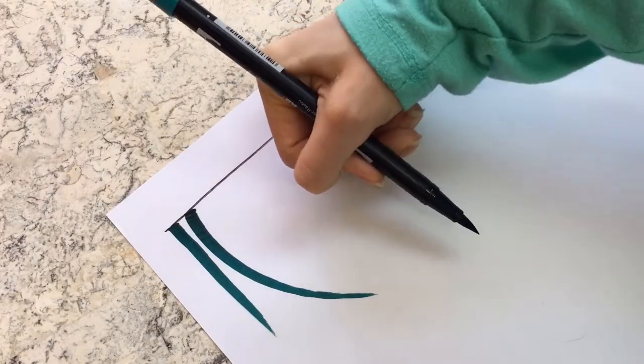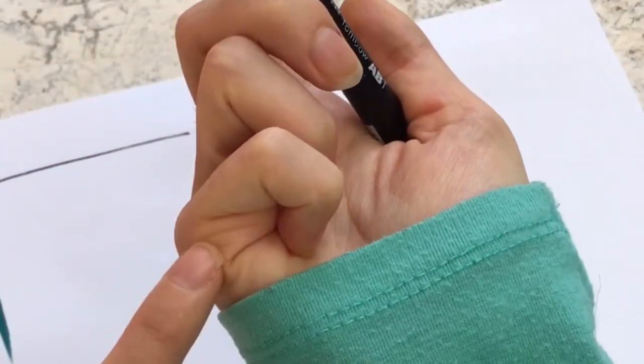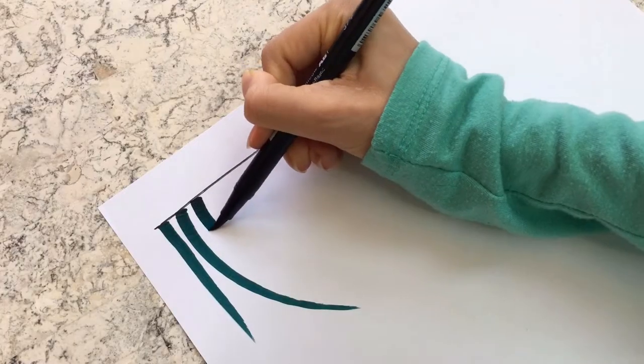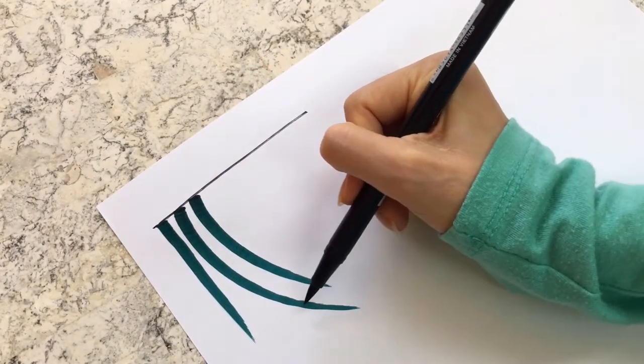To make the spokes curved rather than straight, I leave this part of my hand on the paper and rotate my wrist. This creates a circular motion of the brush tip around my hand.